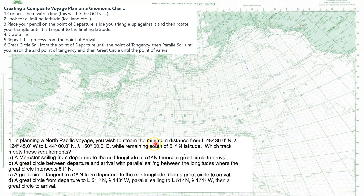In planning a North Pacific voyage, you wish to steam a minimum distance between this latitude and longitude — that's departure — and this latitude and longitude — that's arrival. So you're going to start here, and you're going to go there.